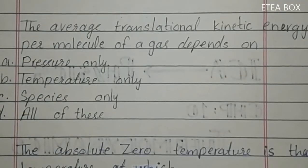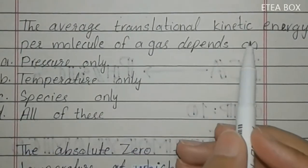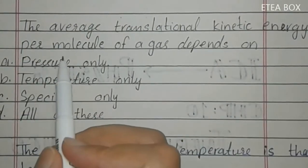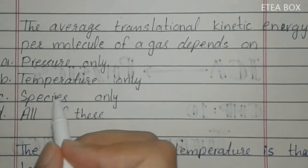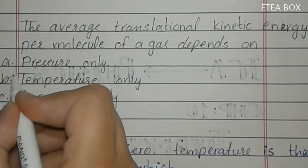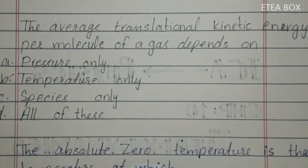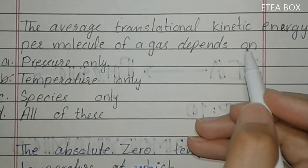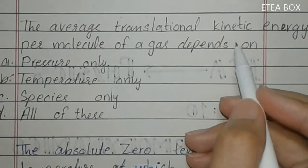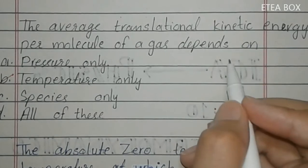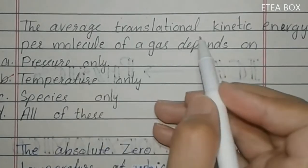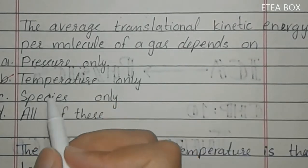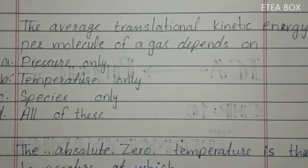Fourth MCQ: the average translational kinetic energy per molecule of a gas depends only on temperature. When temperature increases, the translational kinetic energy increases; when temperature decreases, the kinetic energy decreases. So the average translational kinetic energy per molecule depends upon temperature only.